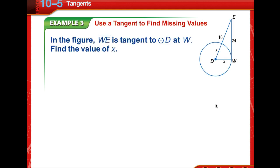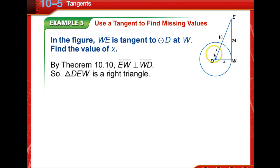Now you can also use Theorem 10-10 to identify missing values. So in this figure, segment WE is tangent to circle D at point W. We're to find the value of X. So by Theorem 10-10, if EW is perpendicular to WD, then DEW is a right angle.